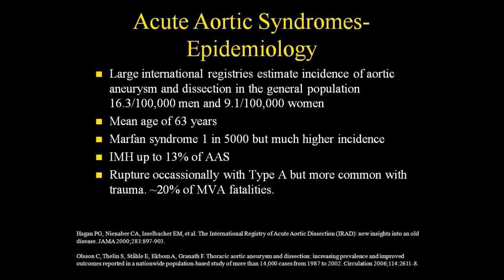Intramural hematomas account for about 13% of all acute aortic syndromes. Rupture can occur with aortic dissection, typically with Type A, but most acute ruptures are associated with trauma. The comedian Sam Kinison is an example — he was in a car accident, got out, was talking, then collapsed. The ligamentum arteriosum inserts on the aorta and anchors it, so shear stress from the impact can rip the aorta and people die suddenly.